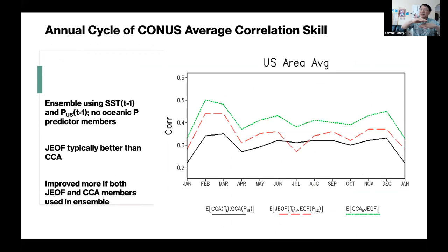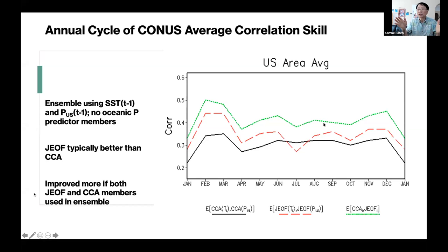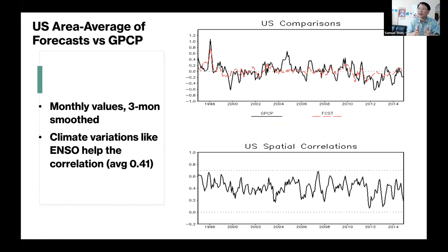Looking at the whole U.S. average, correlation values of around 0.3 to 0.4 improve when combining CCA and joint EOF together. We also check whether we can get the total U.S. precipitation right. The forecast captures the annual signal well, but we miss some large bumps, and the spatial correlation fluctuates up and down.